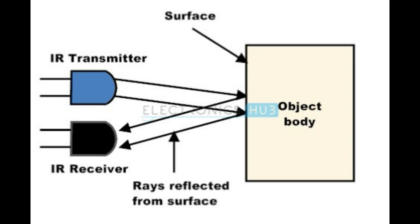Namely IR transmitter and IR receiver. The rays from the IR transmitter hit an obstacle and the IR receiver receives it. This is the kind of signal from the IR sensor. Using Arduino we can process the signal, and further we can use the Arduino code — let's see how to use the code.